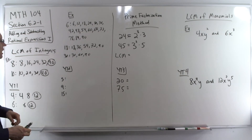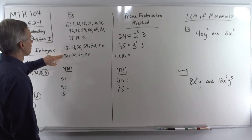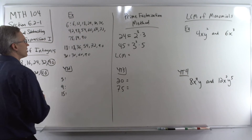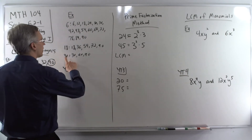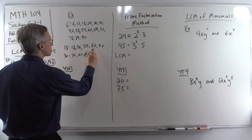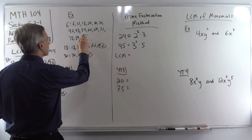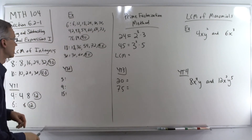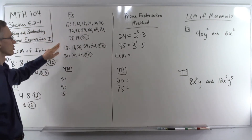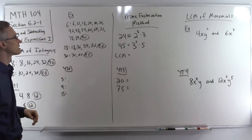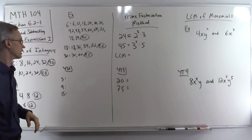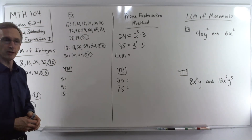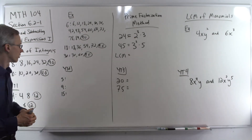A little higher numbers here. We've got 6, 18, and 30. List out the multiples. The first match for those is 90. So you can see when you start getting larger numbers, this method becomes a little bit unwieldy.